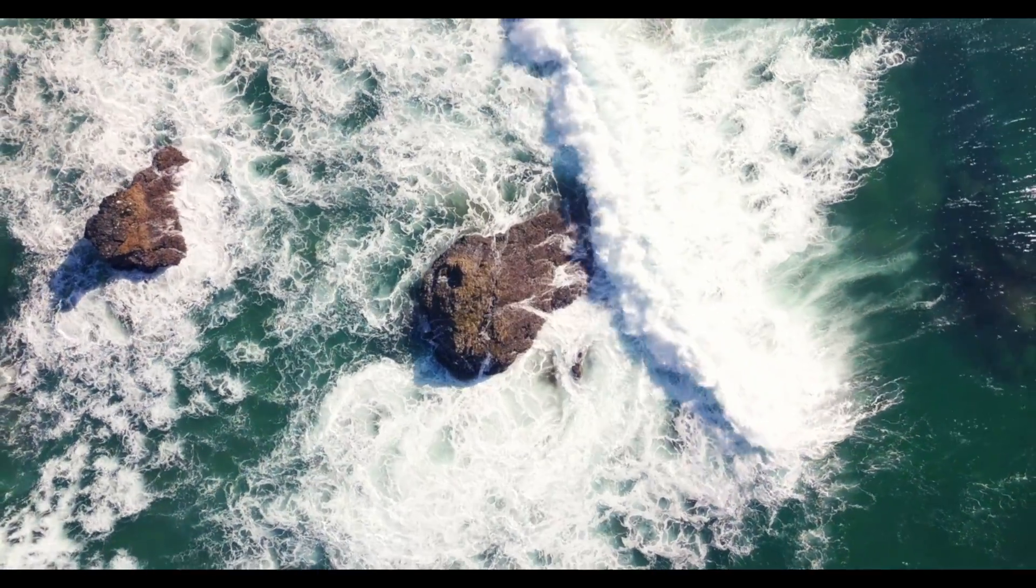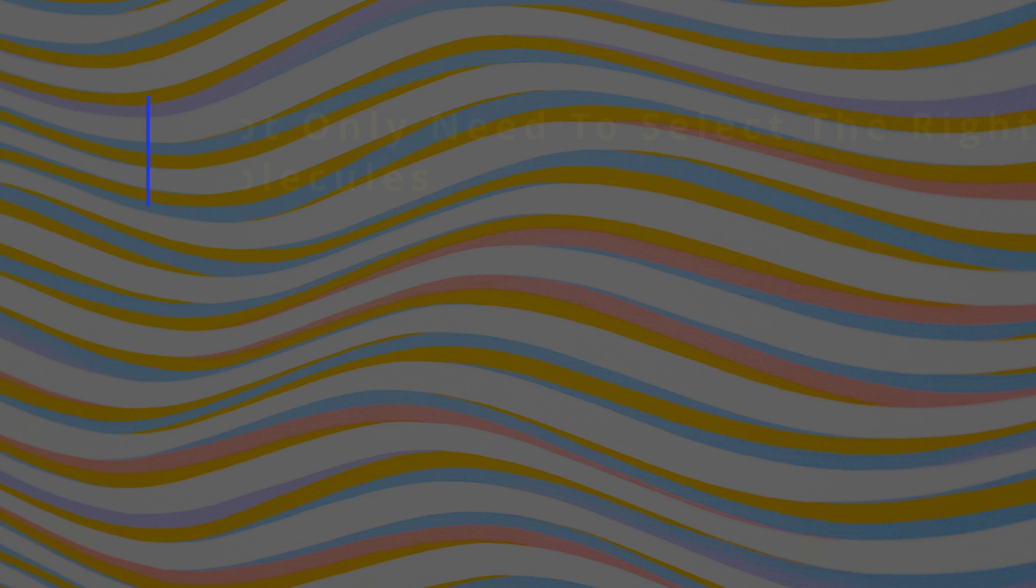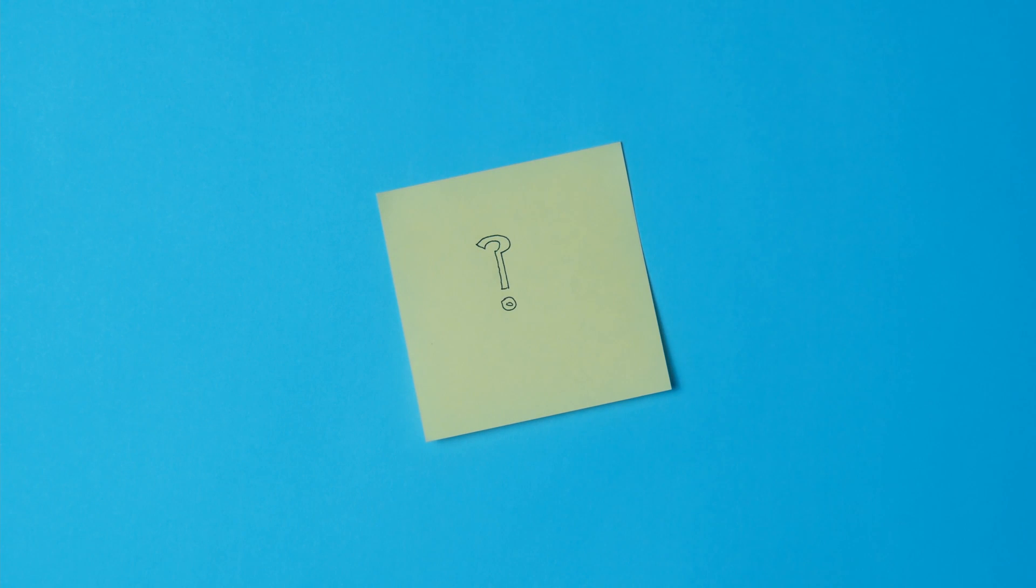So it would seem that we need even more of a selection method. We not only need something to select the right biomolecules, we would need something that collects biomolecules together to help them to concentrate in such a manner that either directly or indirectly leads to their coming together to form macromolecules. What could have done that?